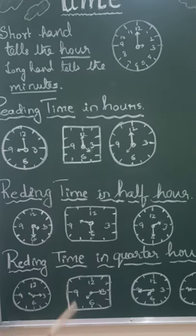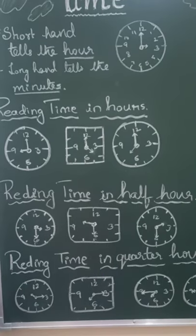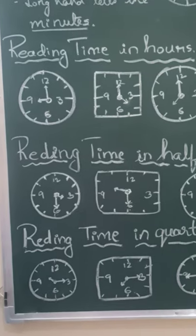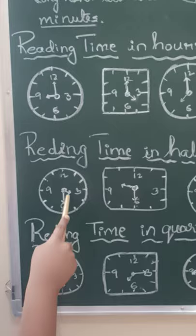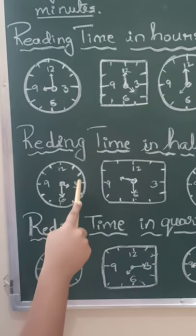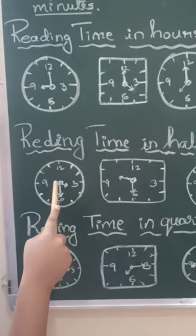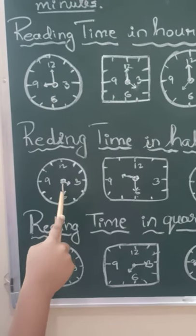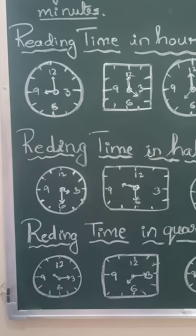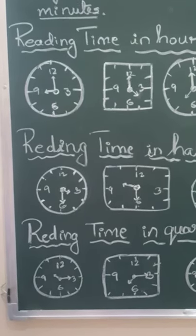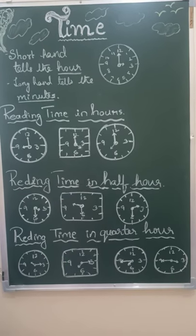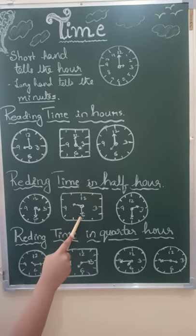Now let's see reading time in half hours. Half hour is also called half past. For example, when the hour hand is in the middle of 3 and 4 and the longhand is pointing to 6, it is called 3:30 or half past 3. Similarly, this is 9:30 or half past 9.